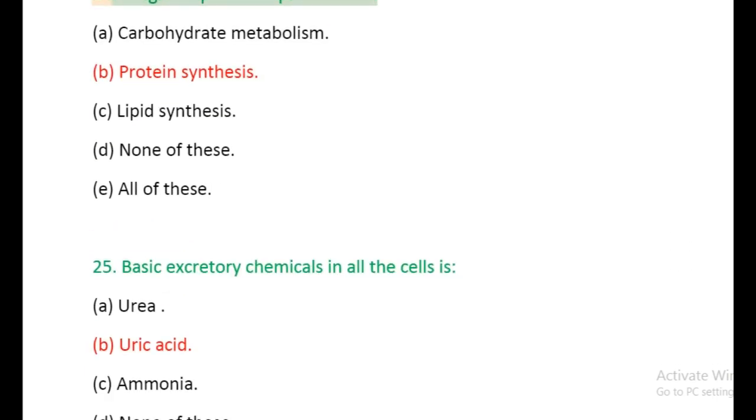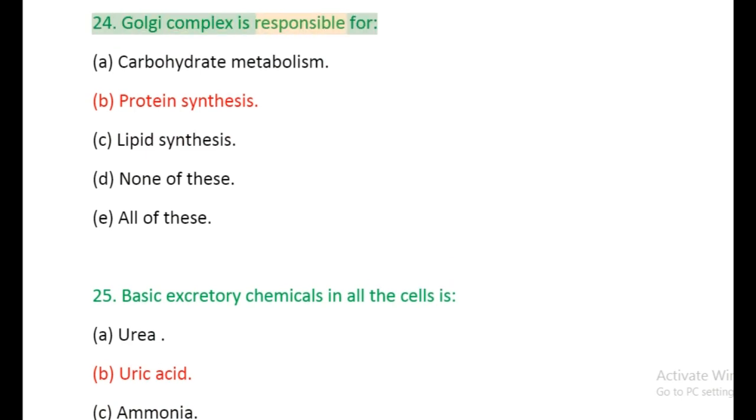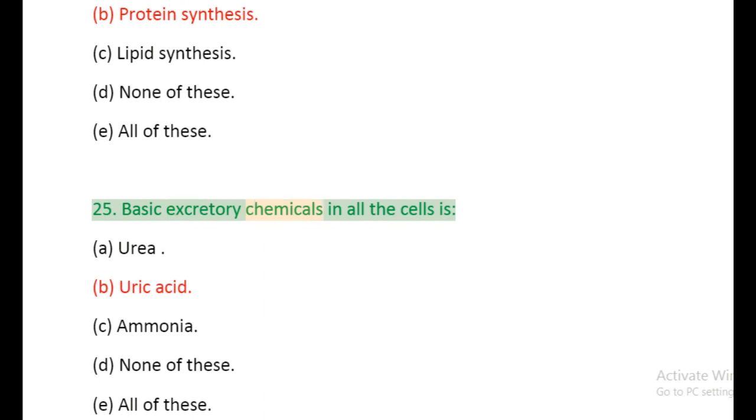Question 24: Golgi complex is responsible for: (a) Carbohydrate metabolism, (b) Protein synthesis, (c) Lipid synthesis, (d) None of these, (e) All of these. Question 25: Basic excretory chemicals in all the cells is: (a) Urea, (b) Uric acid, (c) Ammonia, (d) None of these, (e) All of these.